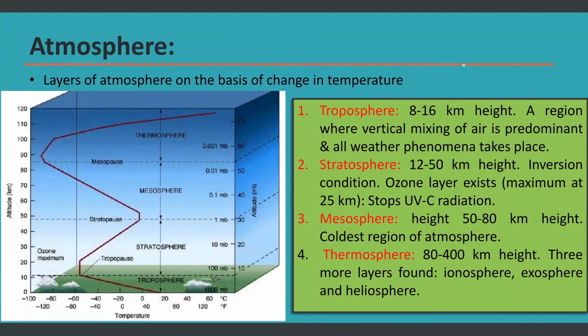The atmosphere is divided into multiple layers. The layers of atmosphere, on the basis of change in temperature, are shown on screen. On the left side you can see multiple different layers listed: the first layer is the troposphere, the second is the stratosphere, the third is the mesosphere, and the fourth layer is the thermosphere.